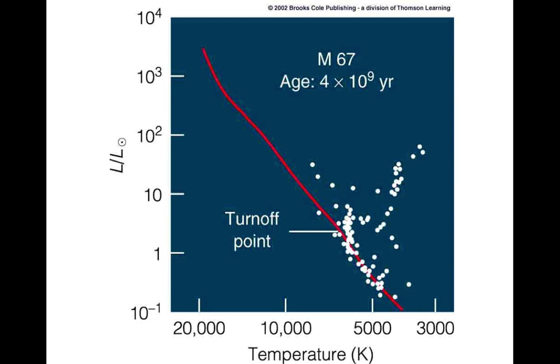As you go to even older systems, now a 4-billion-year-old system, even stars that are only a little bit more massive than the sun have ascended the red giant branch. Stars are turning off of the main sequence, and you see stars moving across horizontally back towards the main sequence as they're going to go off and become white dwarfs later.